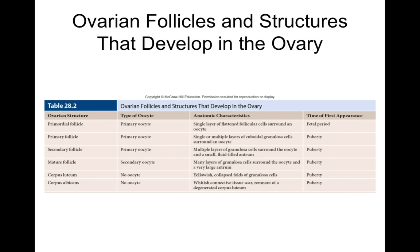In the primordial follicle, we find a primary oocyte that starts to develop during the fetal period. In the primary follicle, we also have a primary oocyte, developing at puberty. The secondary follicle contains a primary oocyte and continues to develop after puberty. As the secondary follicle develops into a mature or tertiary follicle, we find a secondary oocyte — the result of another round of cell division — and this also occurs after puberty.